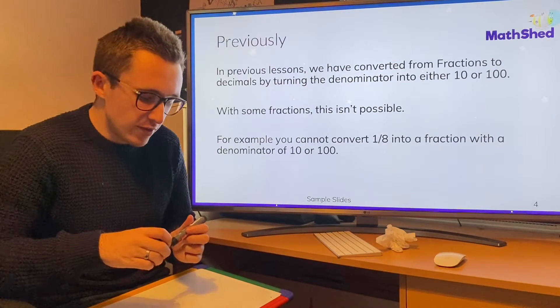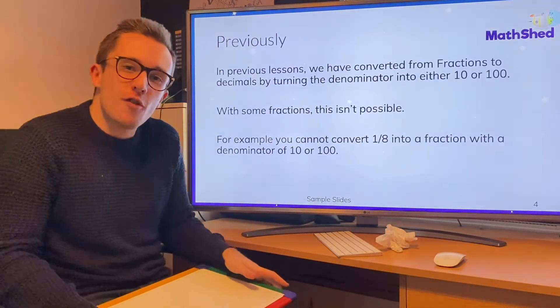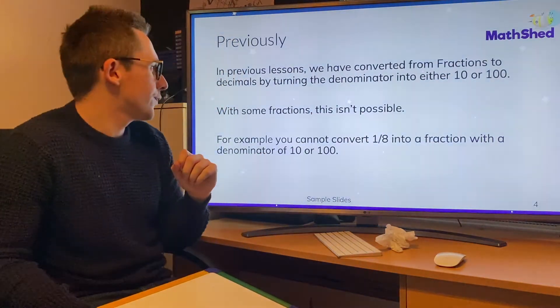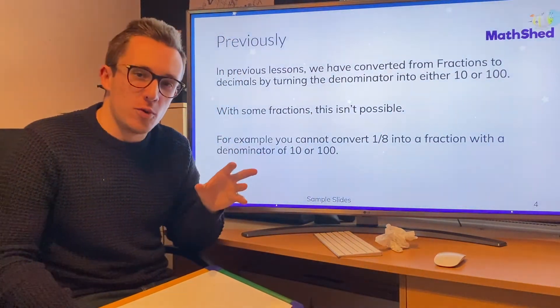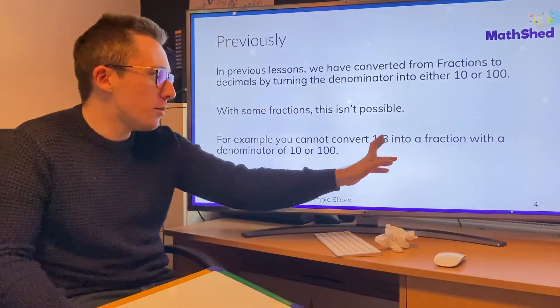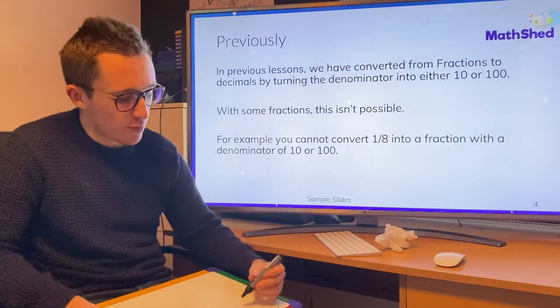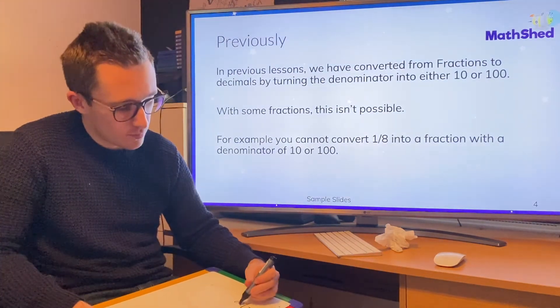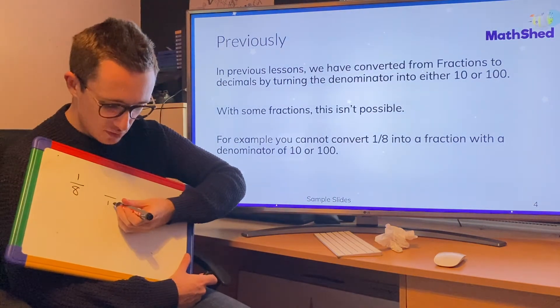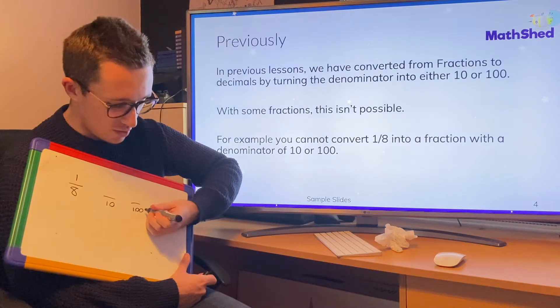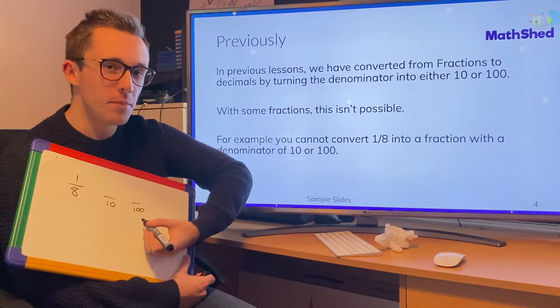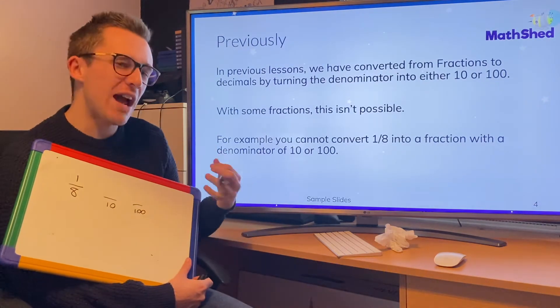So in previous lessons, we were looking at turning a fraction into a decimal by making the denominator either 10 or 100. But with some fractions, that's just not possible. Some fractions, we can't have a denominator of 10 or 100. For example, 1 over 8. We would not be able to make that 8 into 10 or 100, because 8 doesn't times by anything to give us either of those numbers. So we have to have a different strategy.